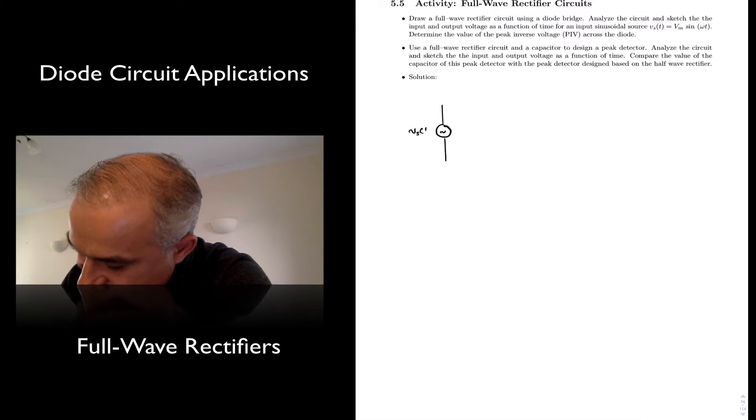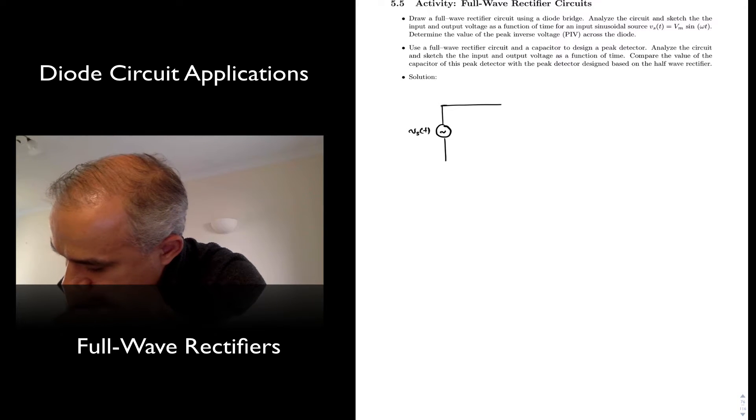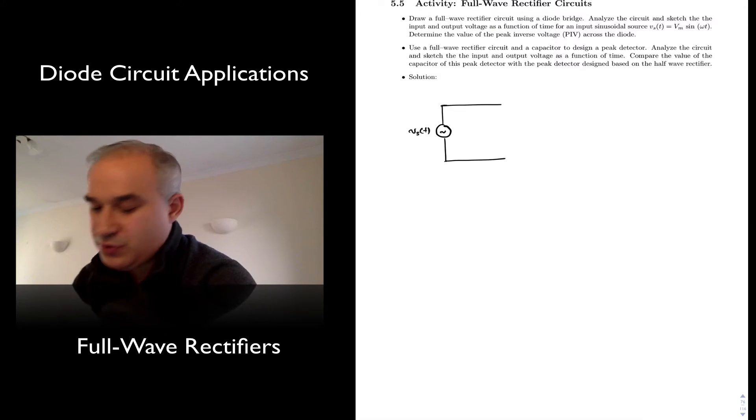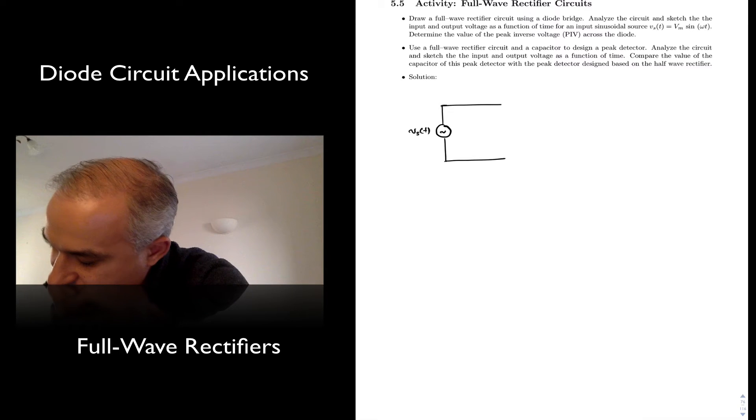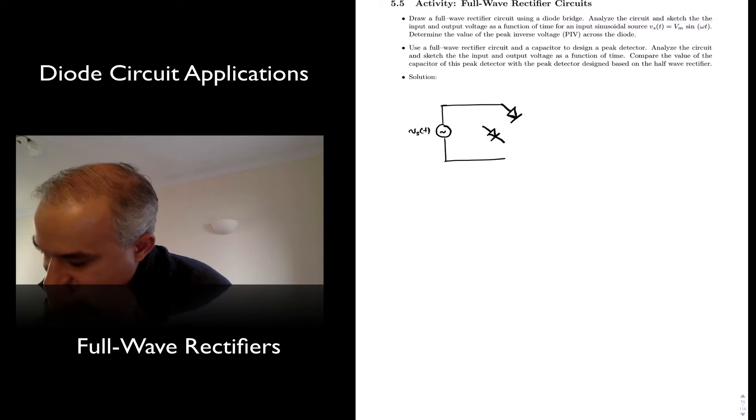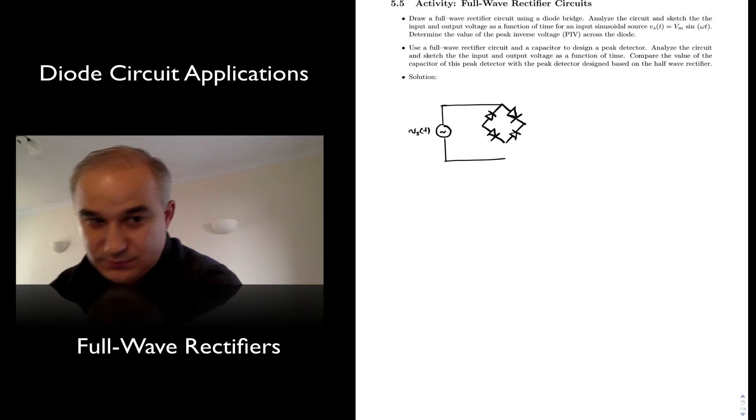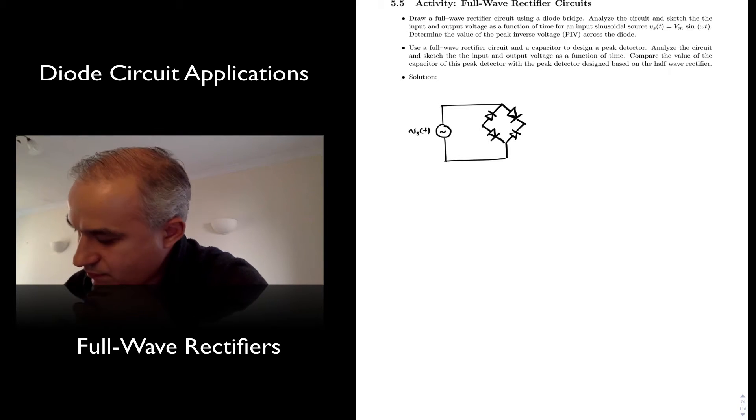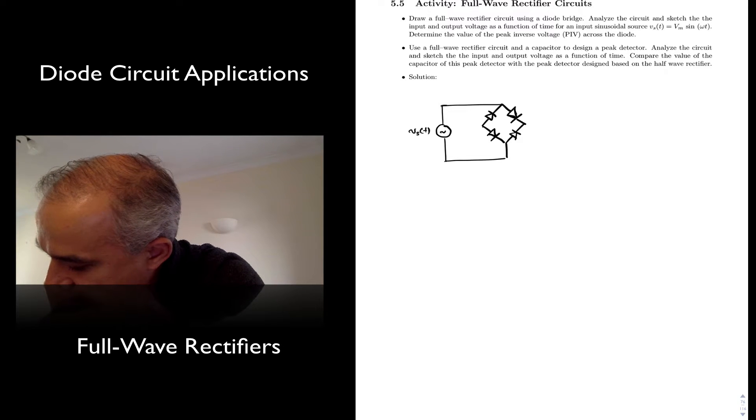So if we have a voltage source here, what we are going to do is to have a diode bridge. It's a circuit comprised of four diodes, configured as follows. So we have two diodes like this in parallel, and then we have these two other diodes.